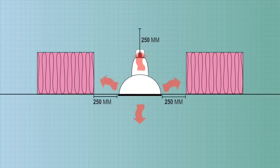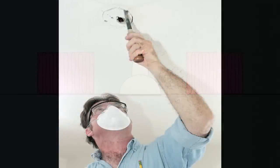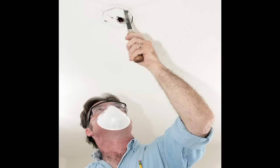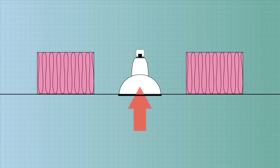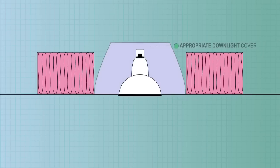Halogen lamps get very hot, so downlights have to be vented to let the heat escape, punching a hole in the ceiling and insulation. This can considerably reduce the home's thermal performance. Fit them with insulating covers to reduce the heat loss.